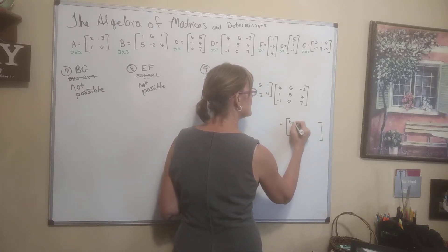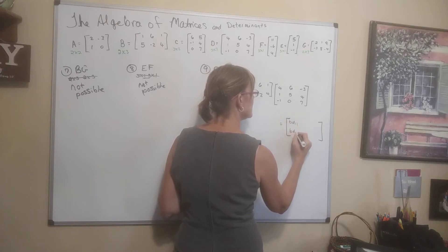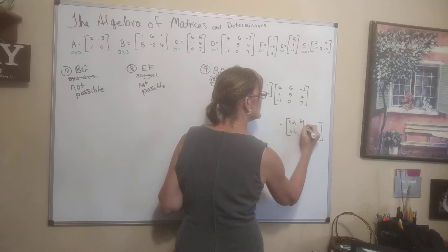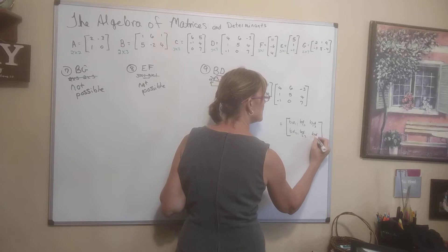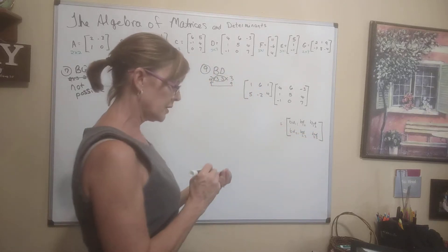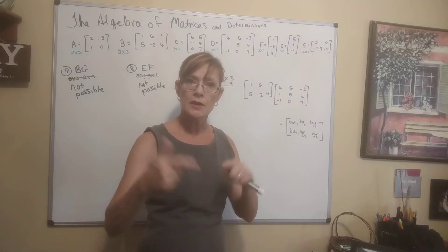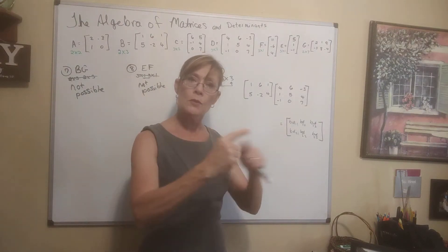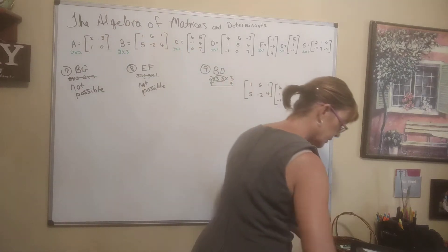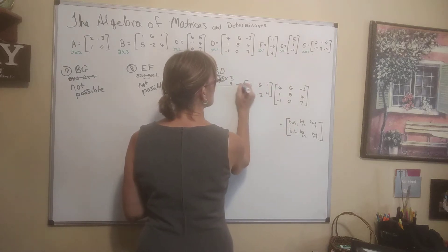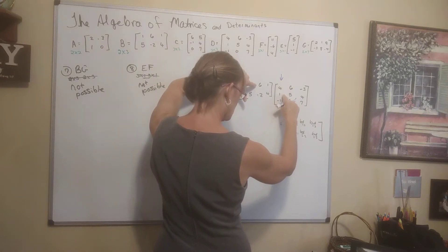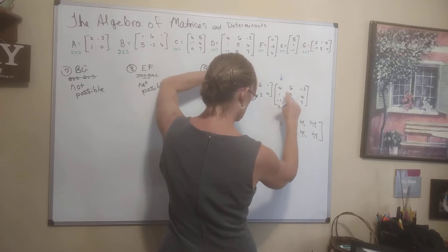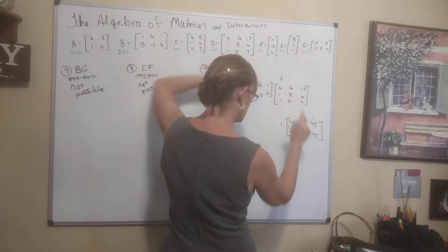I'll label the elements BD row 1 column 1, row 1 column 2, row 1 column 3, row 2 column 1, row 2 column 2, row 2 column 3. To get element 1,1, I multiply row 1 of B by column 1 of D: 1×4 + 5×6 + 6×(−1) = 4 + 30 − 6, wait — 1×4 plus 6 times 1 plus 5 times 6... that gives 4 + 6 = 10, minus 1 = 9. For row 1 column 2: 1×1 + 5×5 + 6×0 = 6 + 30 + 0 = 36.